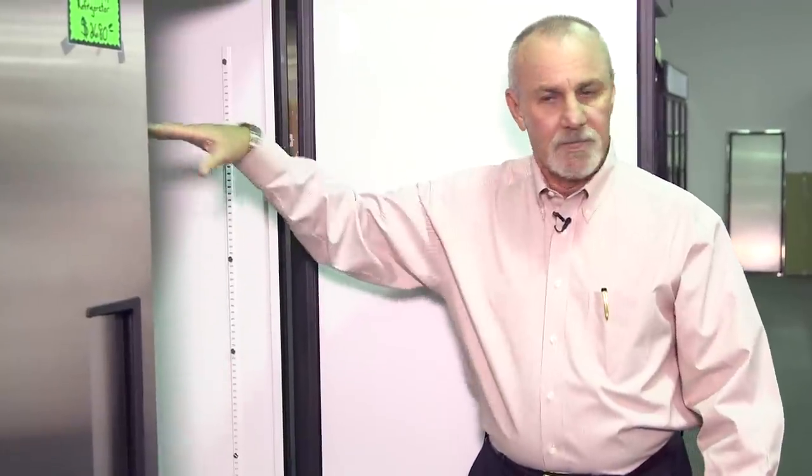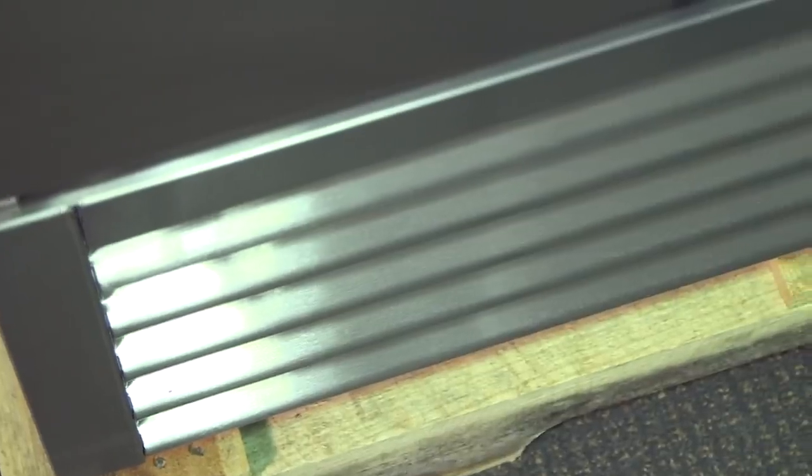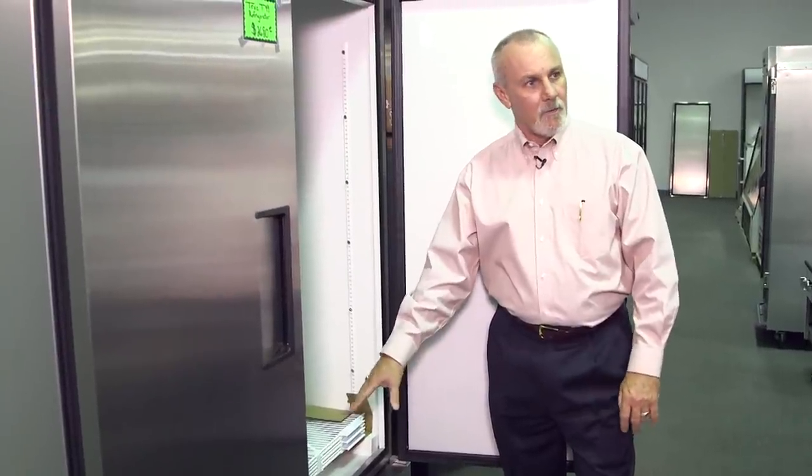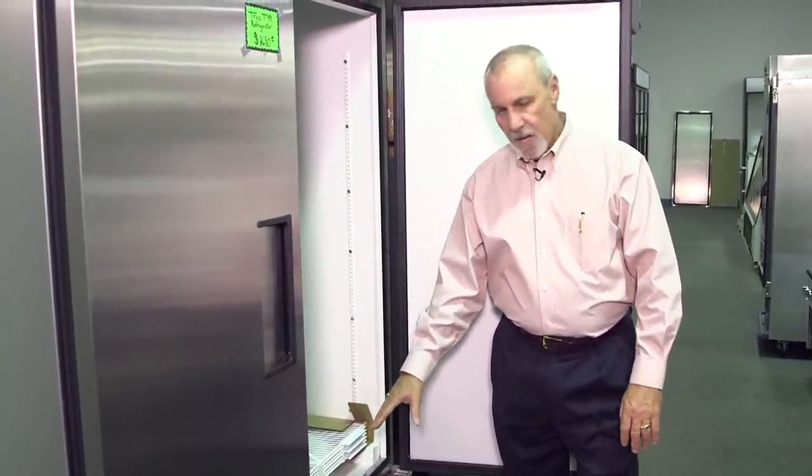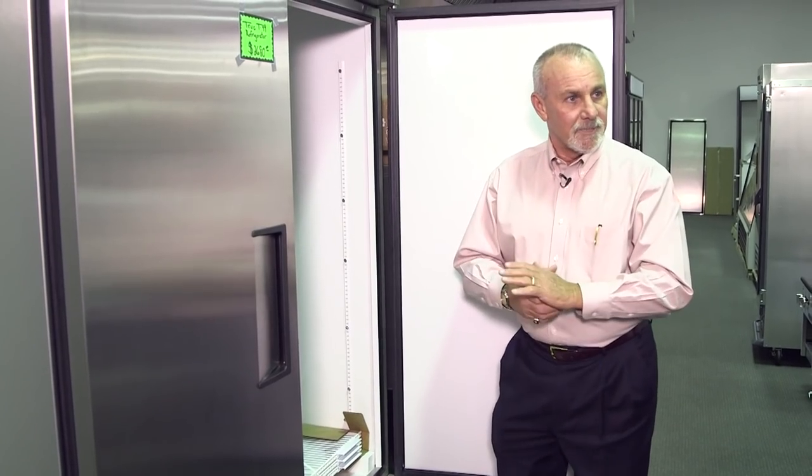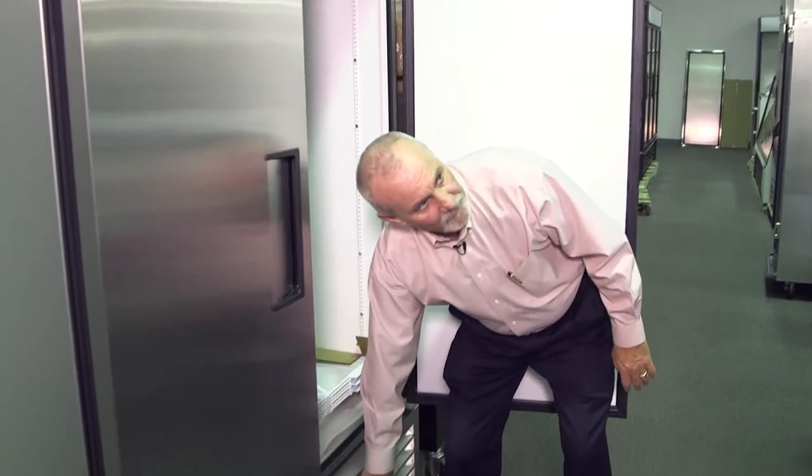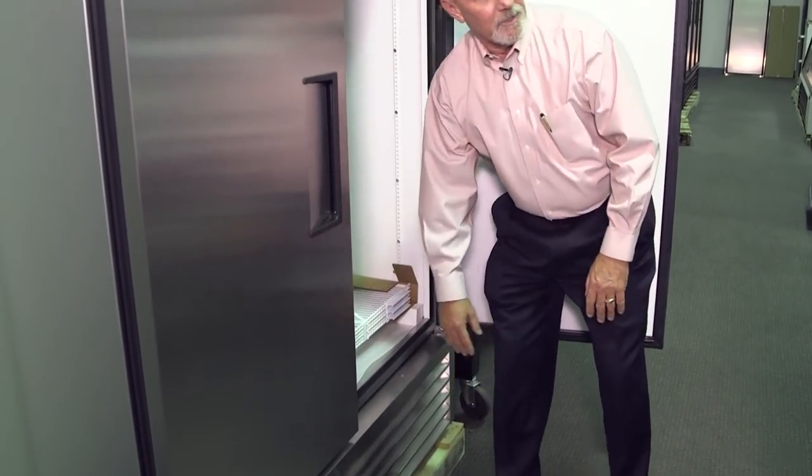This particular manufacturer offers bottom mount refrigeration. The advantage of the bottom mount refrigeration—typically you want to try and use this in a cooking environment because heat's going to rise. With it being down here, this is generally the coolest part of the kitchen.